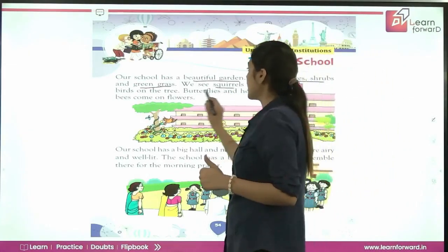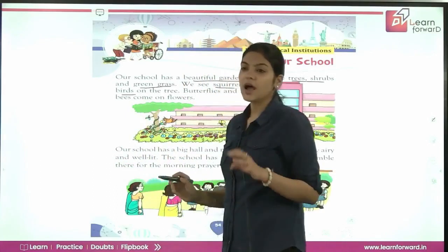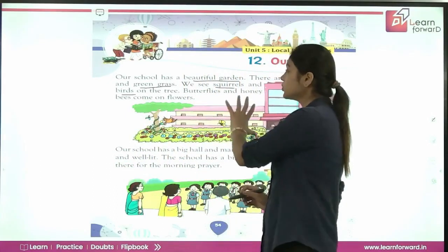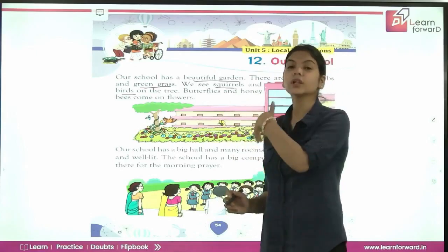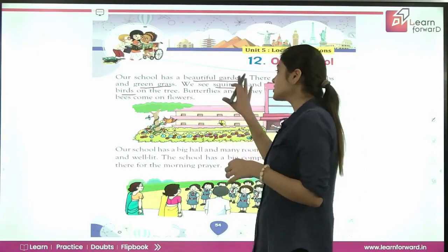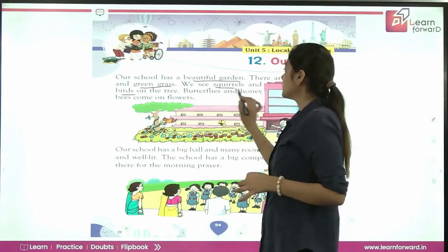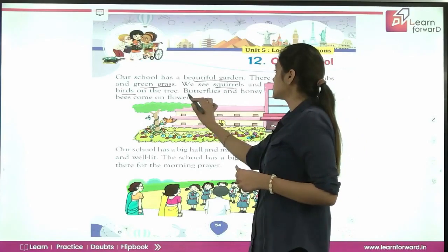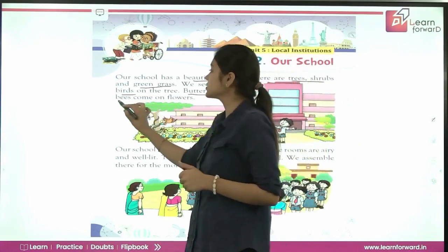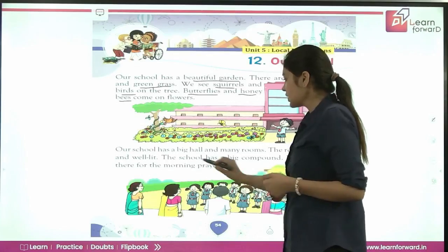We see squirrels and birds on the trees. Squirrels and birds build their homes on the trees only. You can see in your own school also — you will find some squirrels and birds on the trees. Butterflies and honeybees come on flowers to suck the nectar.